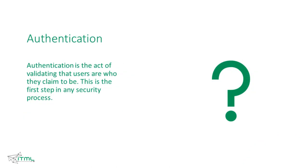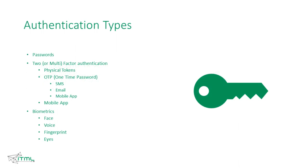An important term in cybersecurity is authentication — the act of validating that users are who they claim to be. We are becoming more familiar with such processes every day. The most common authentication is the password, which is secret and only you are supposed to know. Two or multi-factor authentication is another type. Physical tokens are not so common. One-time passwords are quite common, especially in internet banking. There may also be a separate mobile authenticator app where you confirm your identity. Biometrics is a very secure and common way to authenticate using your fingerprint, face, voice, or eyes.